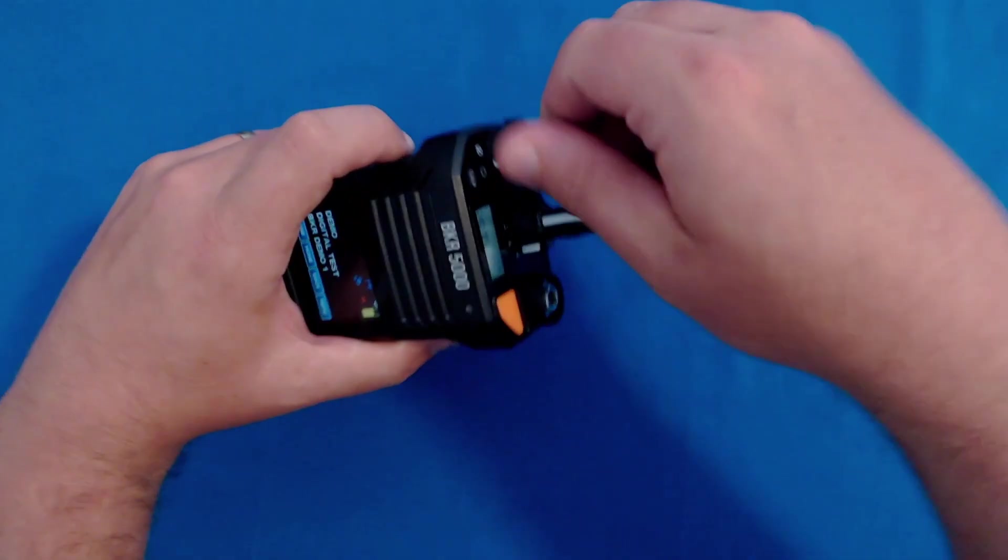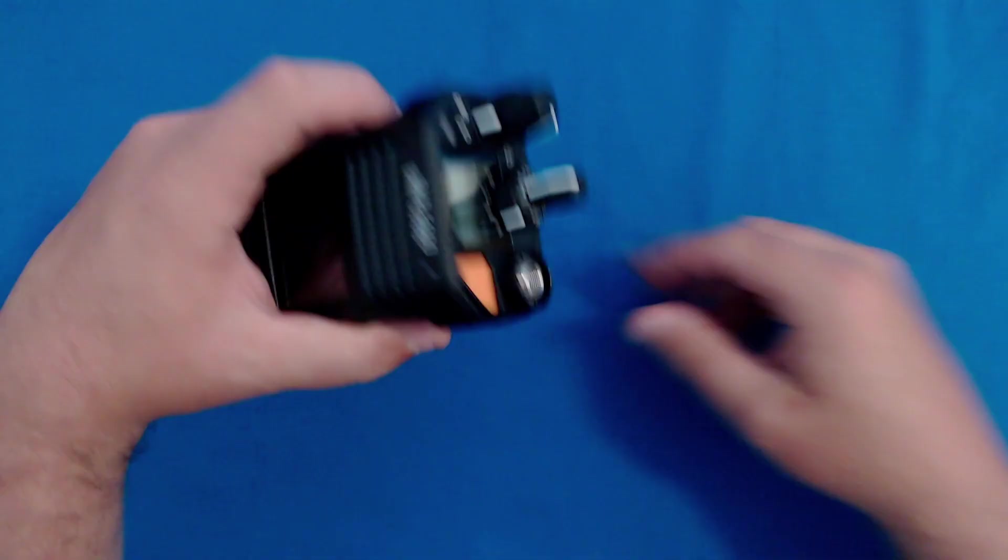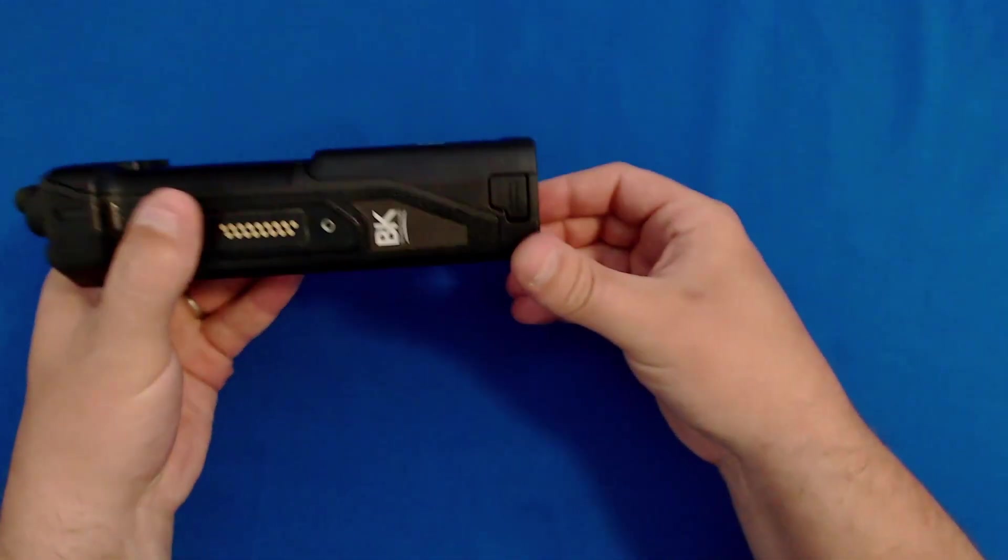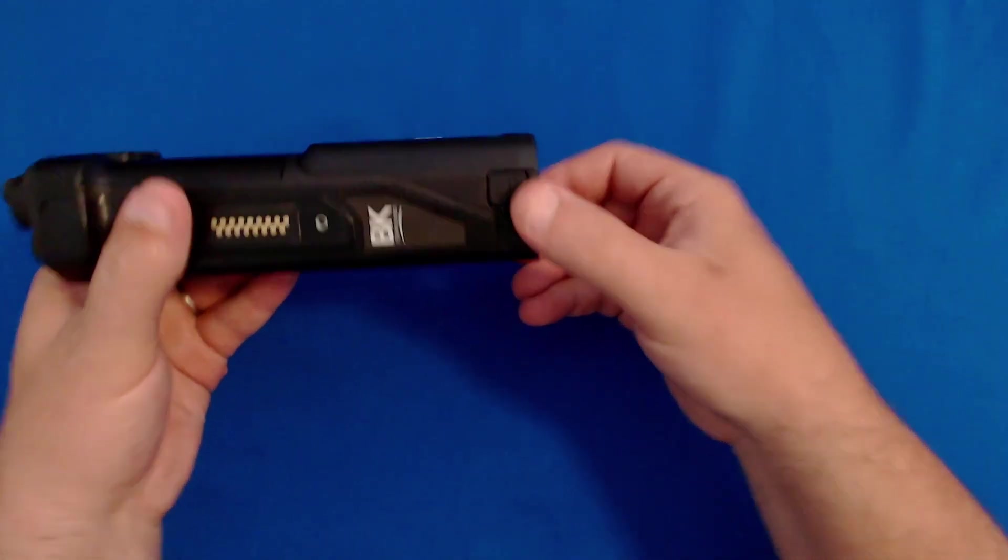To remove the battery, make sure the radio is turned off first, then pinch the retaining pins on either side of the battery, pinch and pull.